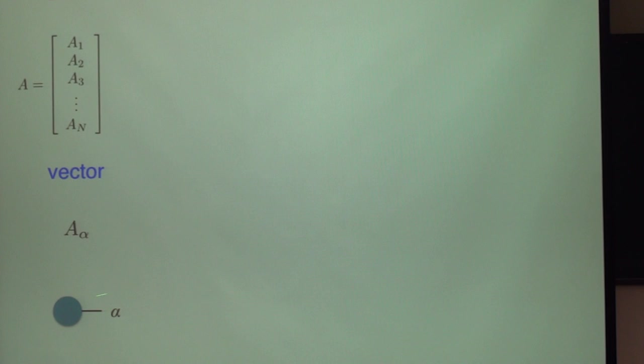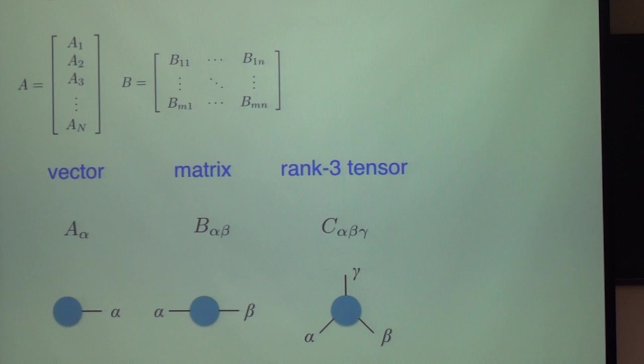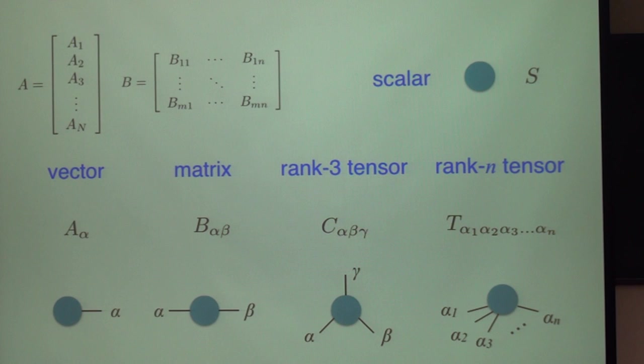I represent tensors using these graphs. This is a vector, basically if I have one external leg, one index I give it a leg. If I have two external legs out of this object I call this a matrix. If I have three legs it's a rank three tensor, so n legs means n indices. Does anybody know how do I represent a scalar? Yes, this is a scalar with how many legs, which means how many indices.